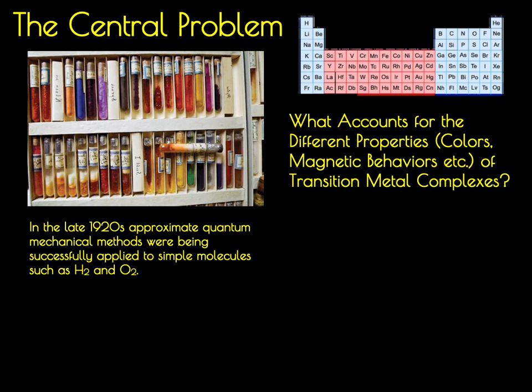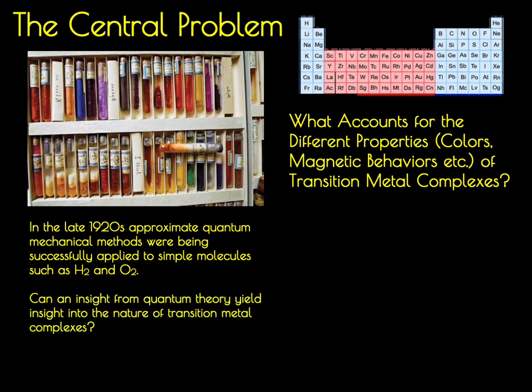Beginning in the late 1920s, scientists started to employ quantum mechanical treatments to understand the electronic structure of simple molecules such as dihydrogen and dioxygen. From these studies, one could start to understand different facets of their properties, such as why dioxygen possesses a paramagnetic ground state. Given the success of these early quantum mechanical treatments, scientists started to think about how they could employ such methods towards understanding the properties of transition metal complexes.